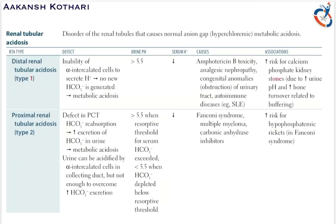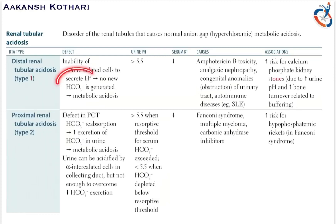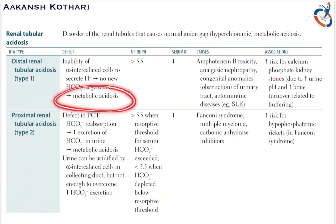The first type of renal tubular acidosis is distal renal tubular acidosis, or distal RTA, which is type 1 RTA. The basic defect is the inability of the alpha intercalated cells to secrete hydrogen ions. Since hydrogen ions cannot be secreted by the kidney, there is a buildup of hydrogen leading to acidosis, and no new bicarbonate is generated to compensate, leading to metabolic acidosis.